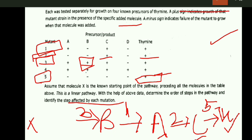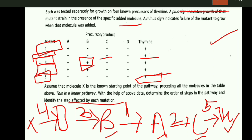In the case of mutant 4, there is growth in all compounds. That's why A, B, C, D, and thiamine are all placed after mutant 4. A, B, C, and thiamine are already mentioned, so compound D is positioned here, and mutant 4 is placed here. This is the correct order of the pathway.